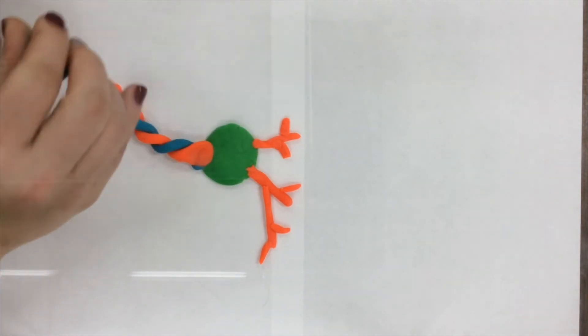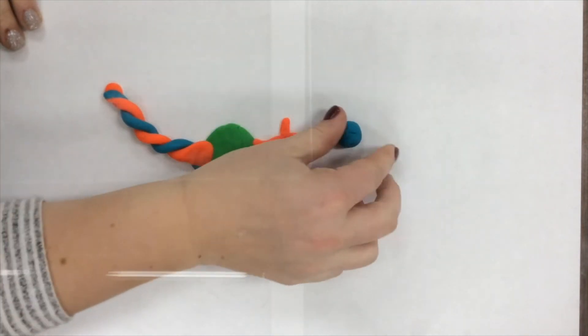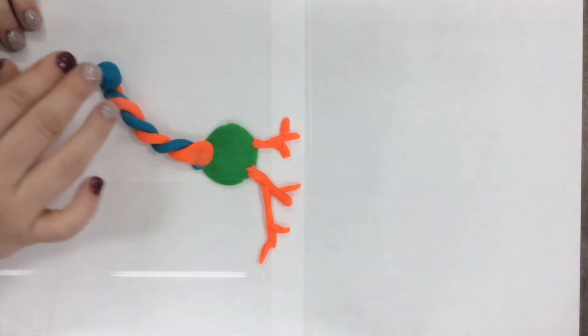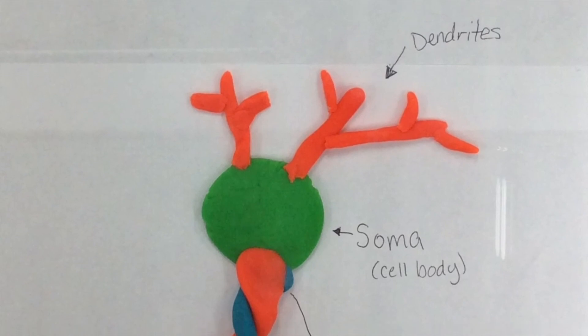I use the color blue. This last piece of clay represents the synaptic terminal. I rolled the blue clay into a small ball and then pressed it onto the end of our axon. Here's our finished neuron.